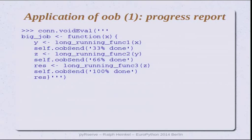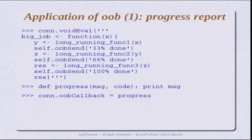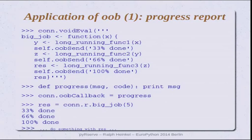One possible application of callbacks is providing a feedback message for your progress. Here you see a dummy big_job function which has intermittent callbacks. OOB send reports how far the calculation has been done. A primitive callback method in Python just prints it. When you call big_job, the callback messages are printed out while the R function is still running, and at the end you get the result back.